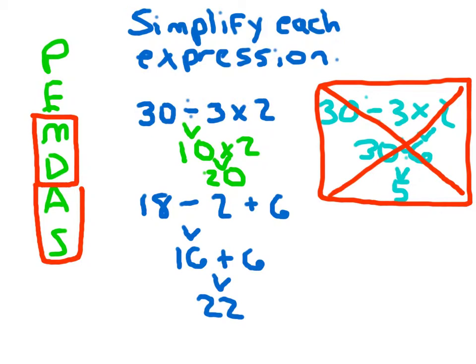I've written out the steps to work addition and subtraction from left to right. 18 minus 2 is the first addition or subtraction problem we come across, so 18 minus 2 evaluates to 16. Then we bring down the plus 6 here. 16 plus 6 evaluates to 22.